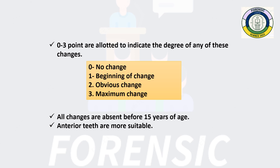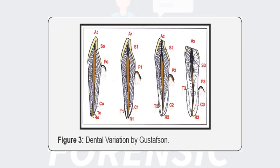To follow this method, anterior teeth are more suitable. In this image we can relate the attrition level from A0, A1, A2, and A3. Then secondary dentin from S0, S1, S2, S3 — more thick with comparison to S1. We can check periodontosis from P0 to P3 as gum lining shifts toward the root. Thick cementum collection is seen at C3 compared to C1. Transparency of root and degradation of root are more severe at T3 and R3 locations.